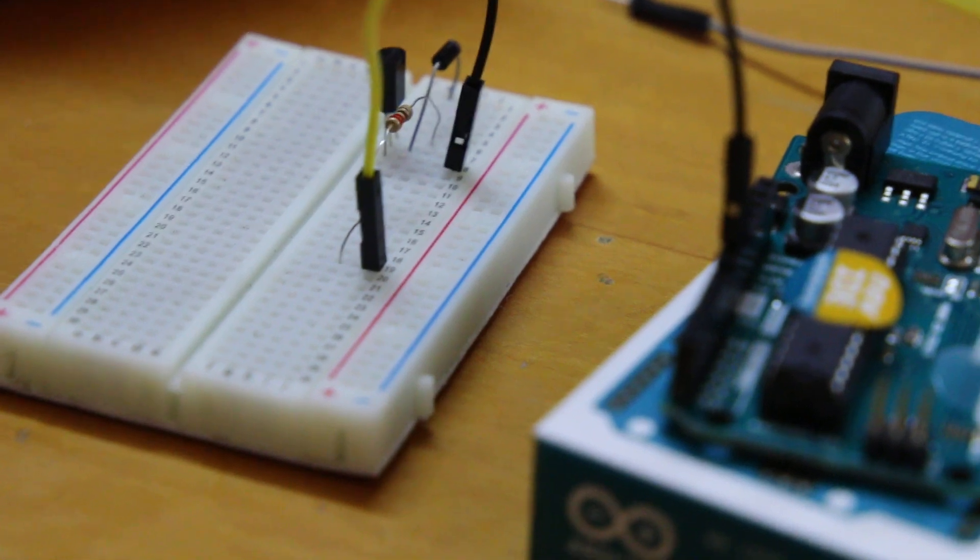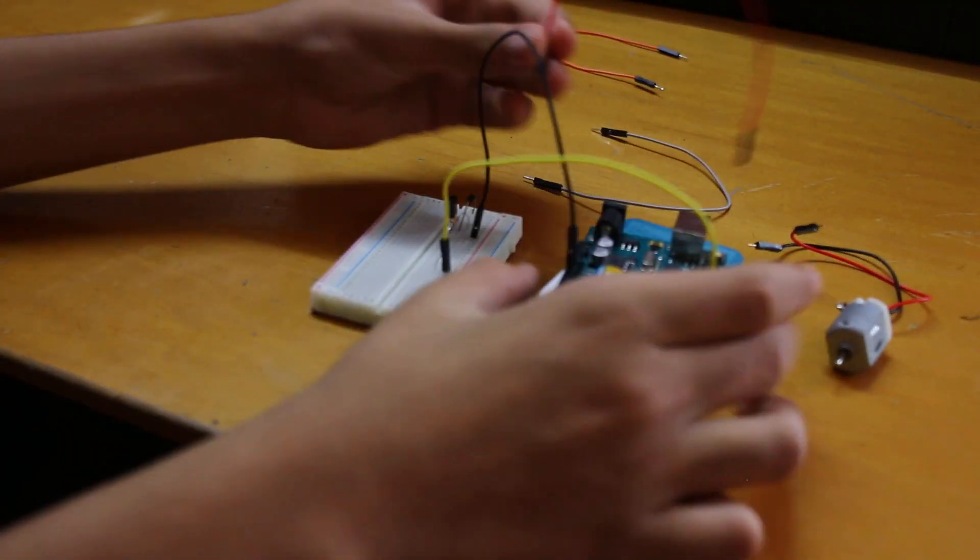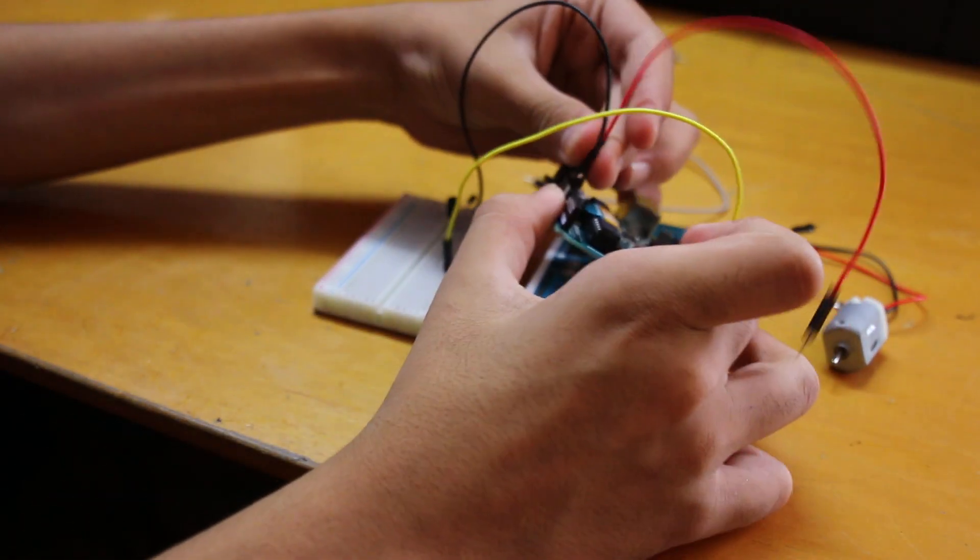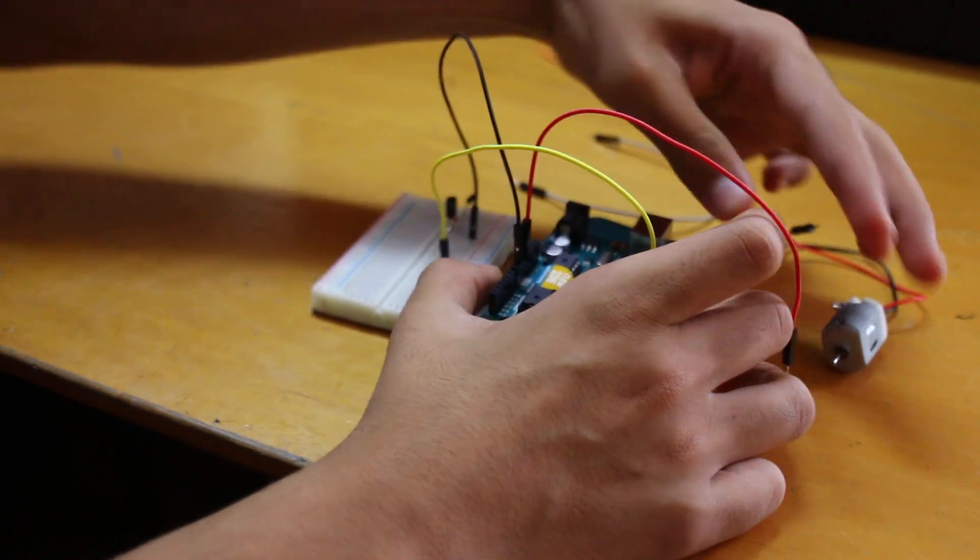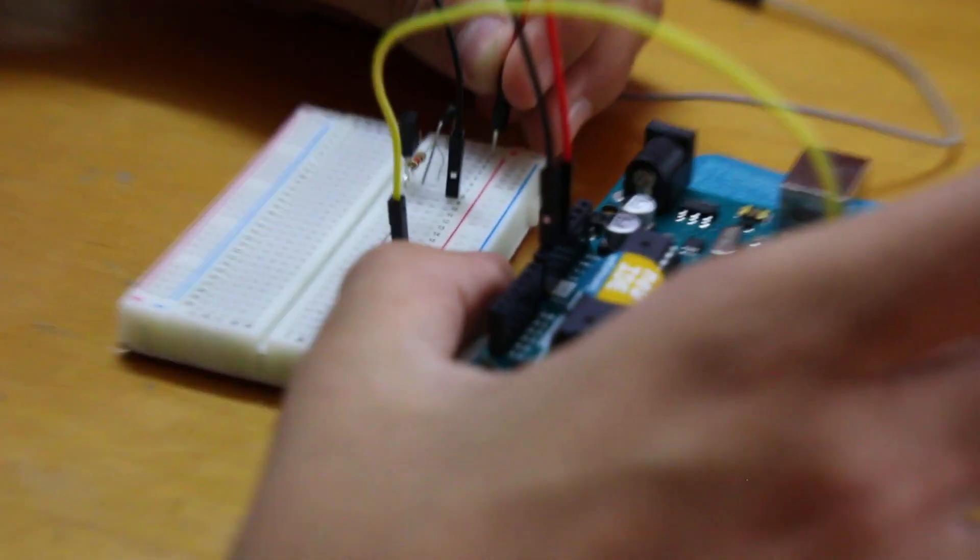Now we're going to use Arduino's 5V output, which is the power pin, over here. And we're going to connect it over here. Just like that.